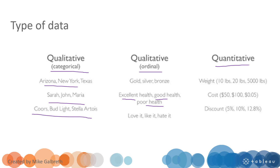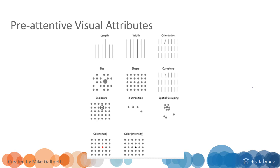We also have numbers, and those pre-attentive attributes are processed by our brain immediately. Those visual attributes include length, width, shape, size, positions, orientations, and also colors.